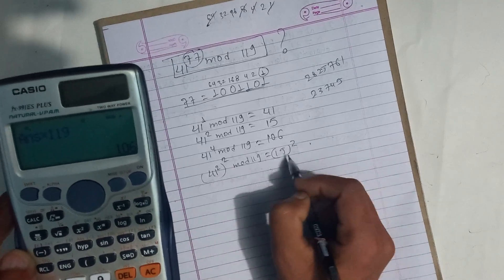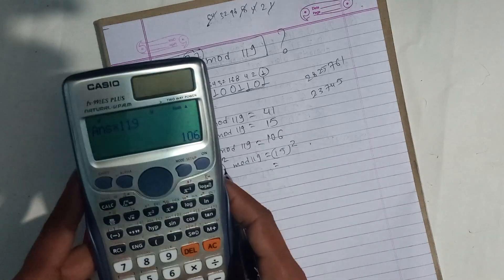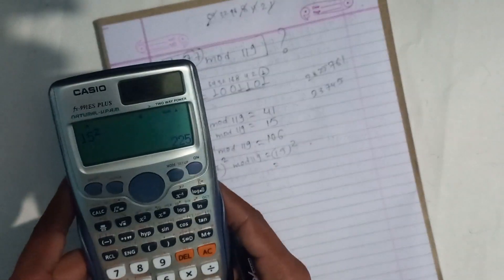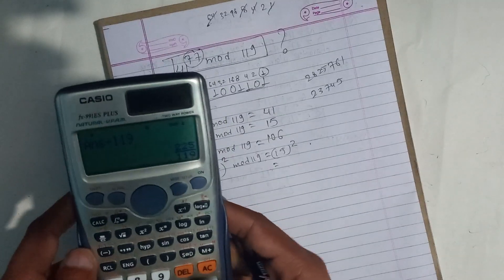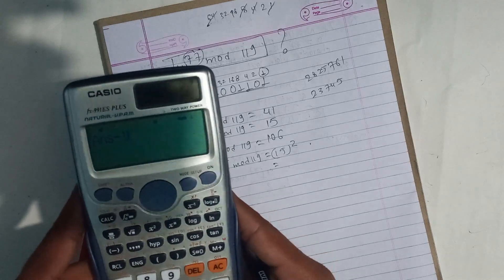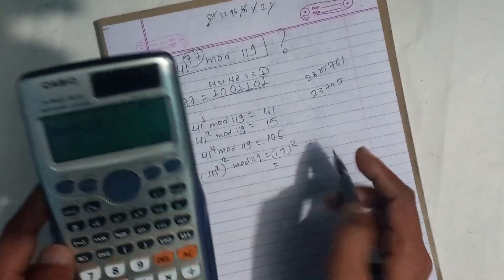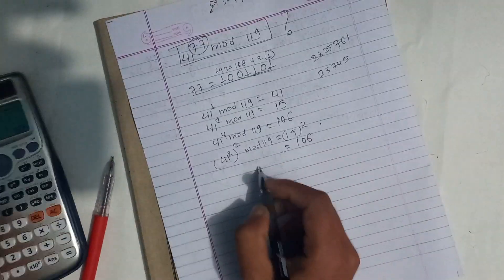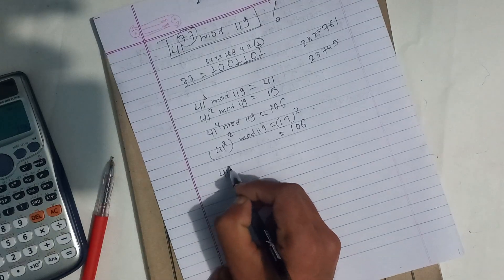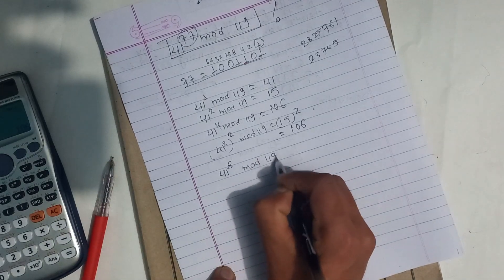So this is how I'm going to do this: 15 squared mod 119, which is 119 divided by minus 1 into 119, which is 106. So this is the property of 41 to power 8 mod 119.